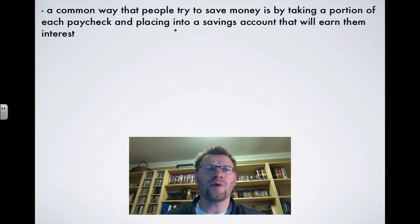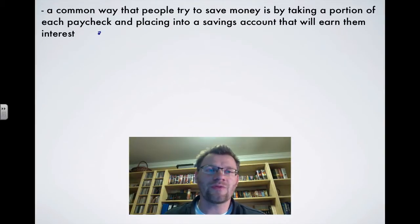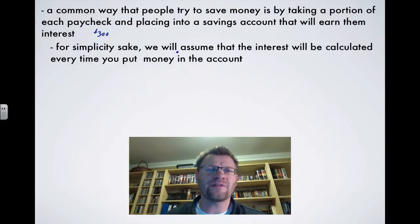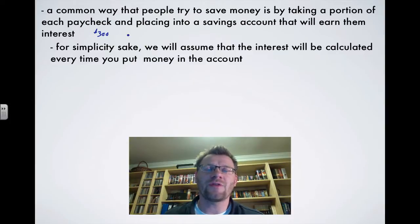A common way that people try to save money is by taking a portion of each paycheck and placing it into a savings account that will earn them interest. Say you're going to put away $300 every month — you take that out of every paycheck, put it in an account, and it builds interest. For simplicity, we'll assume the interest is calculated every time you put money into the account, so if you're putting money in monthly, the interest is calculated monthly.